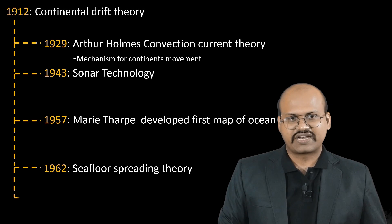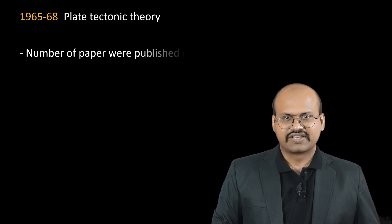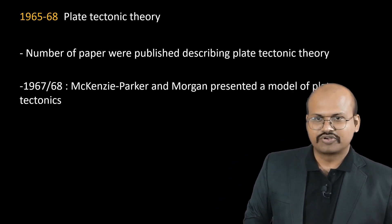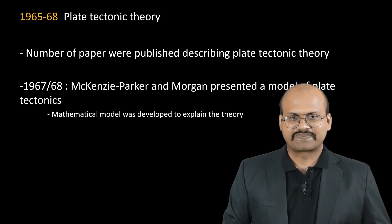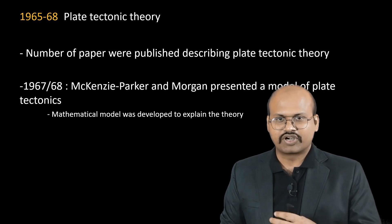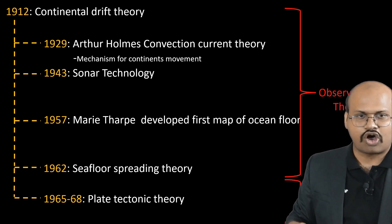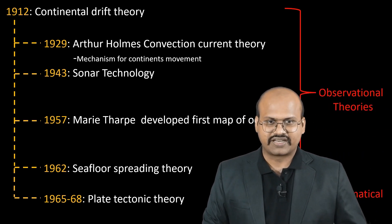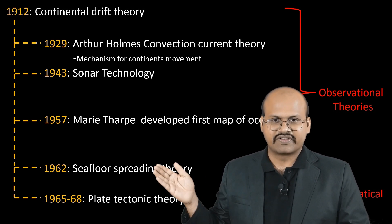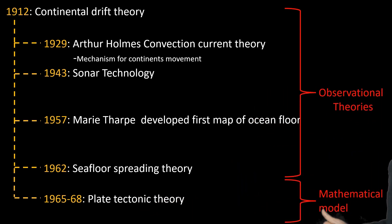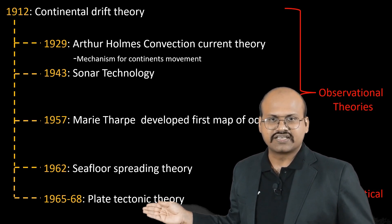From 1965 to 1968 we got plate tectonic theory. This theory was not developed by one single person but through a series of published papers. The major contribution came from McKenzie and Parker, who worked together, and Morgan, who worked independently. They developed a mathematical model explaining all the forces causing the movement of continents. Unlike previous observational theories based only on observations, plate tectonic theory provided a mathematical formulation, making it far more accurate than all prior theories, which is why it is still accepted today.